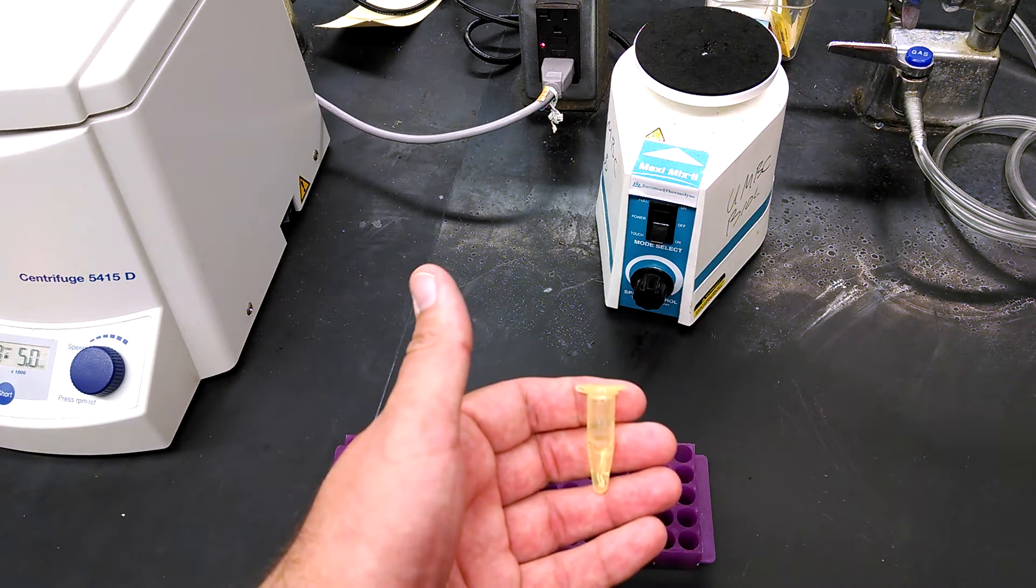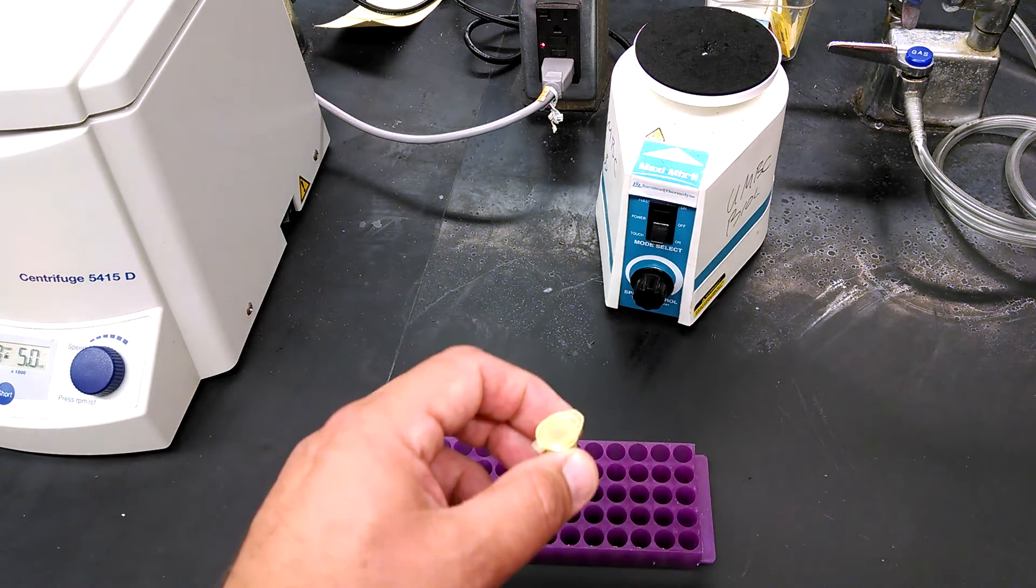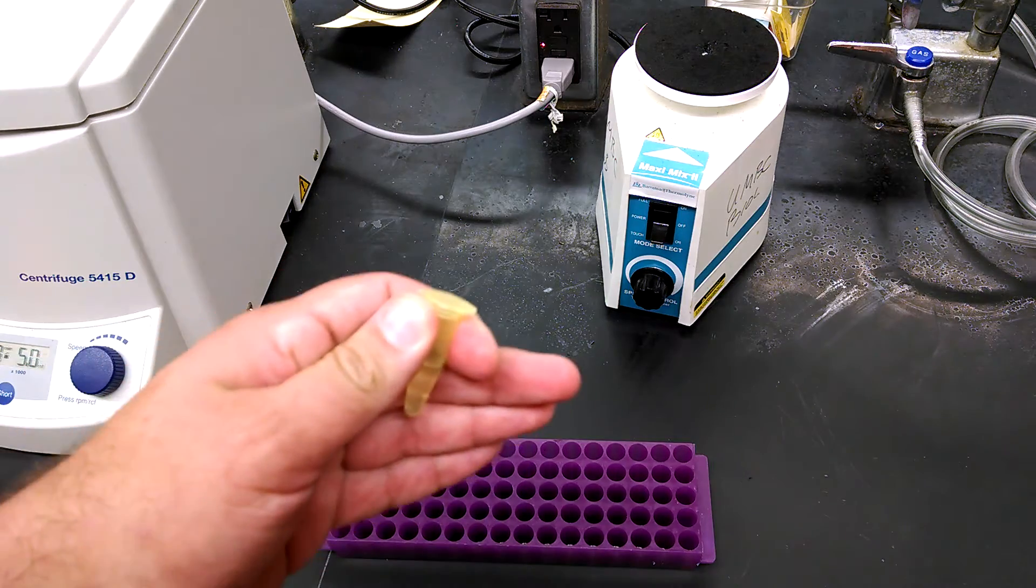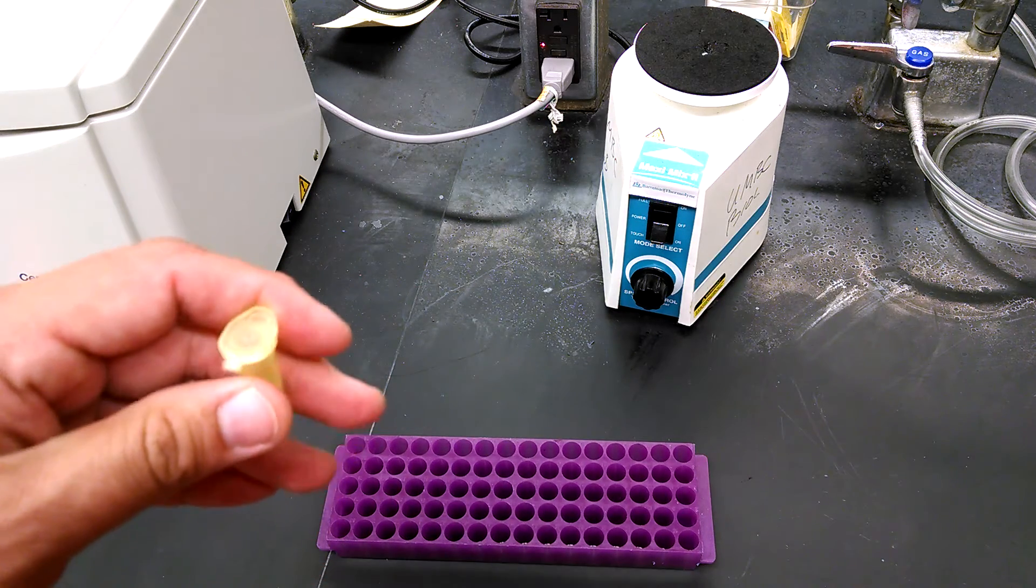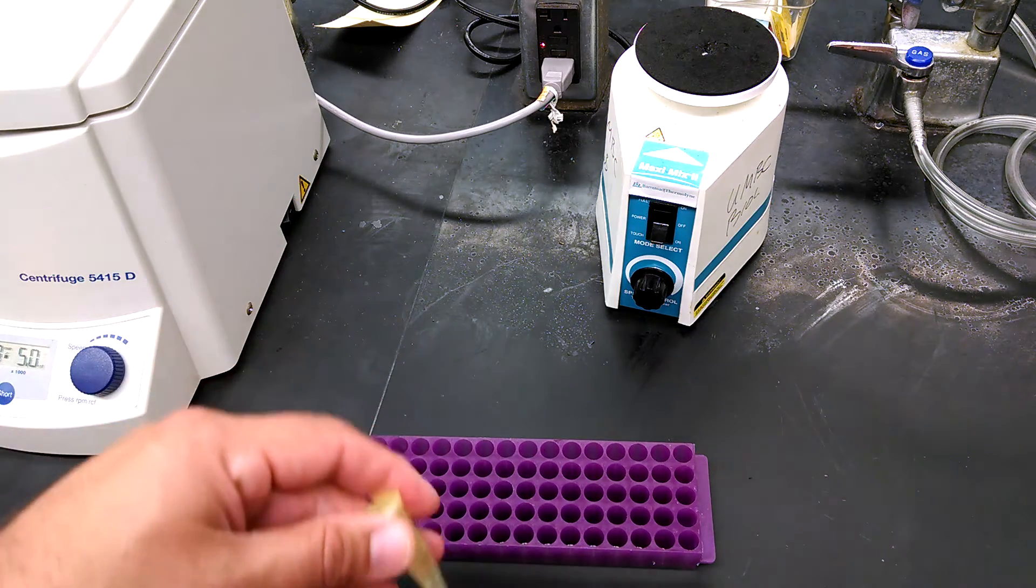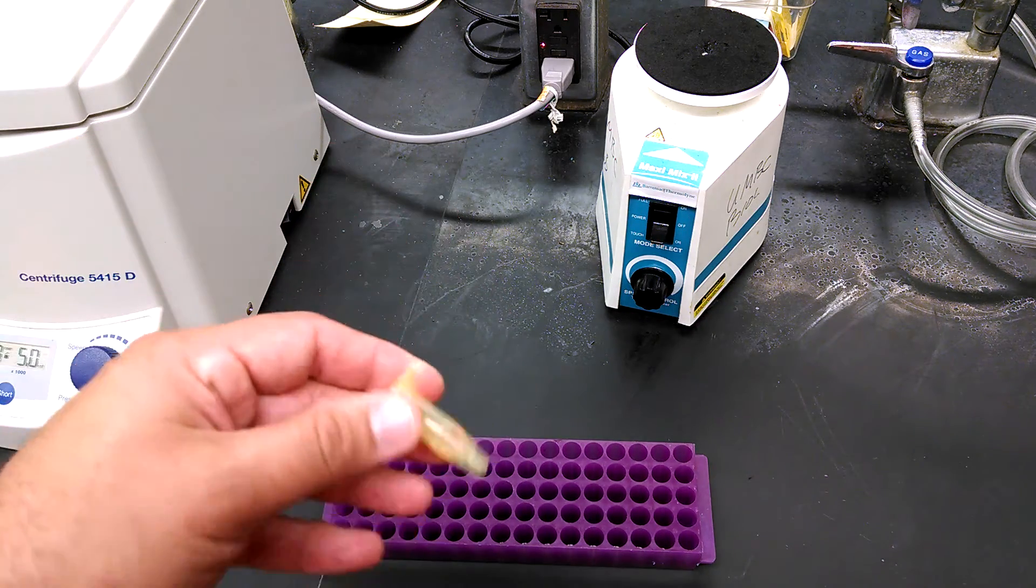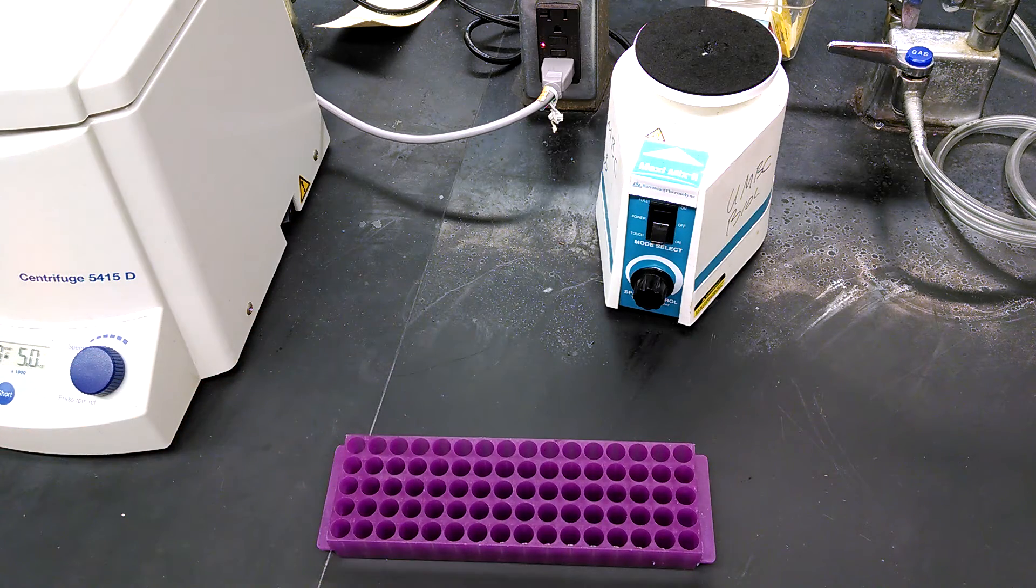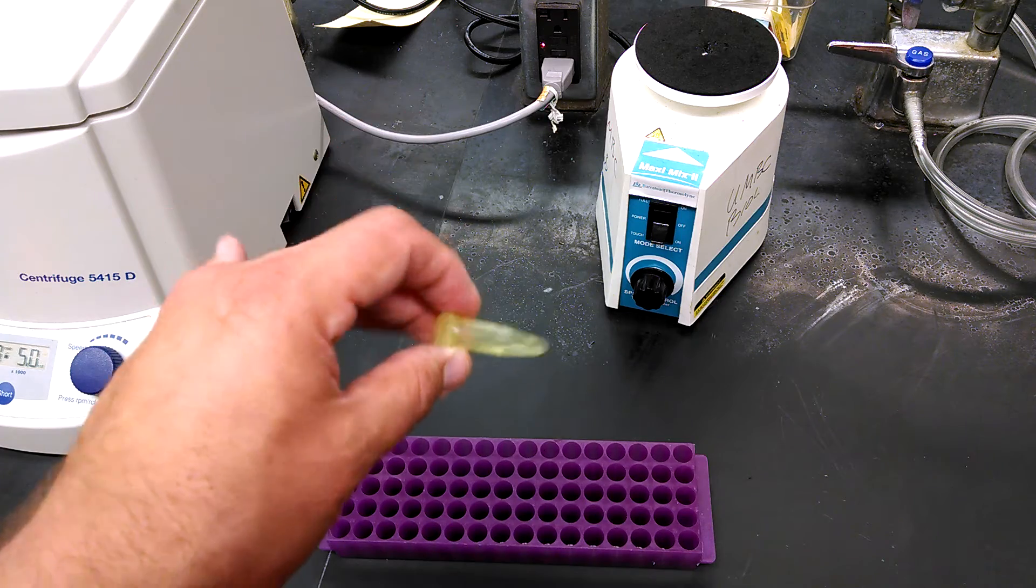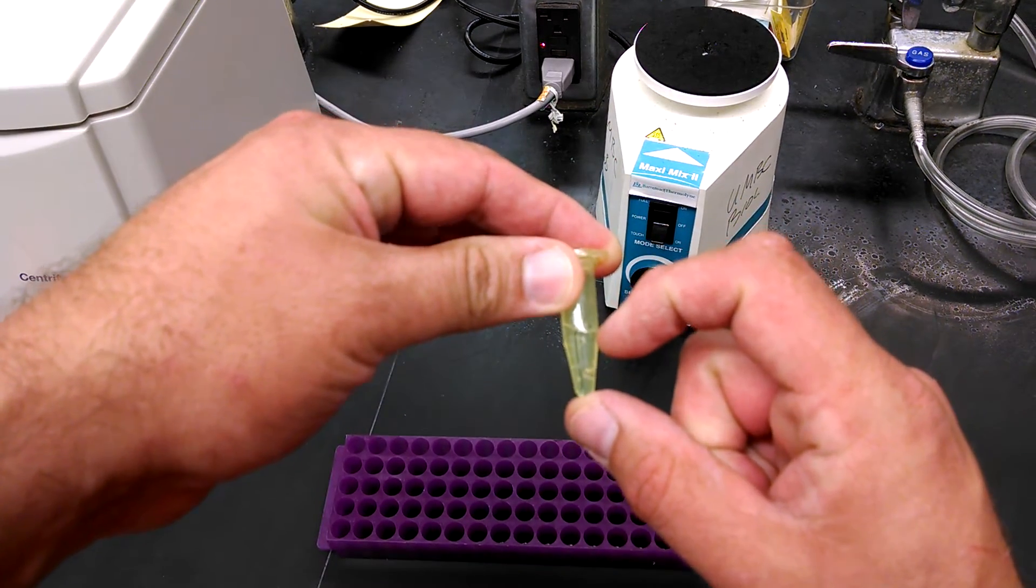Now we need to break these cells open and access them. So what you're going to do is centrifuge these following the procedure in the lab manual, and then you're going to add them to Instagene. Once you add them to some pre-prepared Instagene tubes, which will come to you in a tube looking just like this with about 200 microliters in the tube.